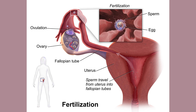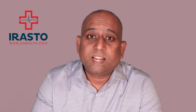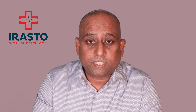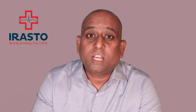Here you can see the sperms deposited in the vagina go through the uterus and reach the fallopian tube where they meet the egg and fertilization takes place. The whole process for the sperm to meet the egg takes place in a few minutes. If pregnancy occurs, the fertilized egg implants.